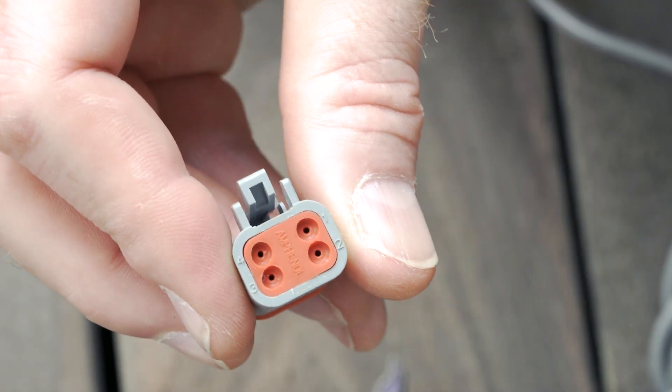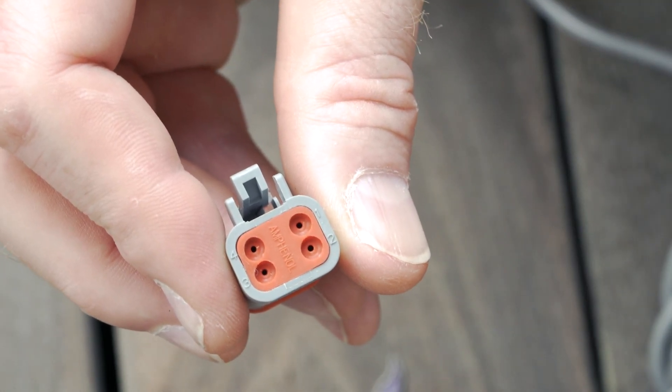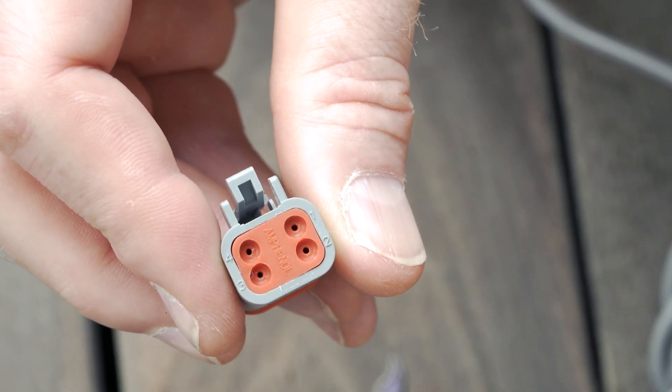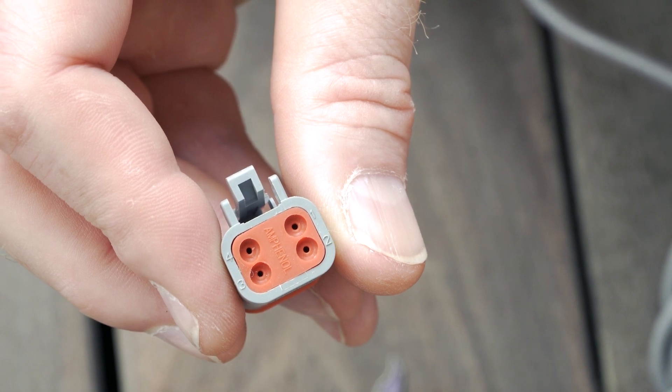What you want to do is look at the back of the connector itself. You'll notice that each socket has a number one through four and those correspond to the colors on the wire. Number one is green, number two is white, number three is red, and number four is black.